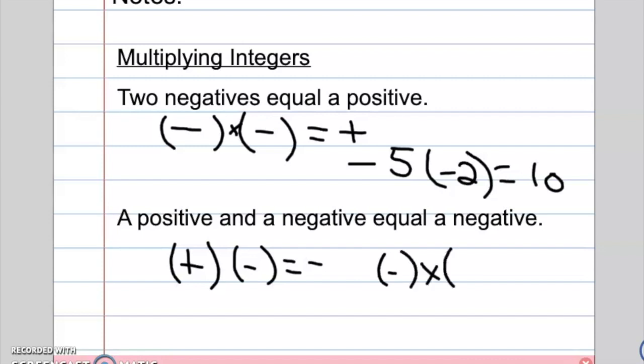Now, if you switch them around, a negative times a positive, it's still going to equal a negative. For example, if we have negative seven times eight, that will equal negative fifty-six. Seven times eight is fifty-six. Put the negative sign in there as well.